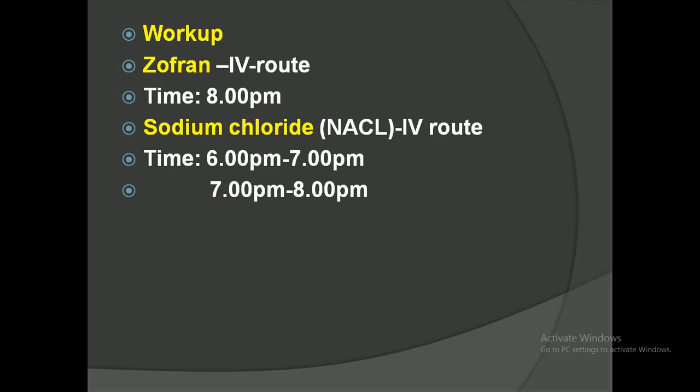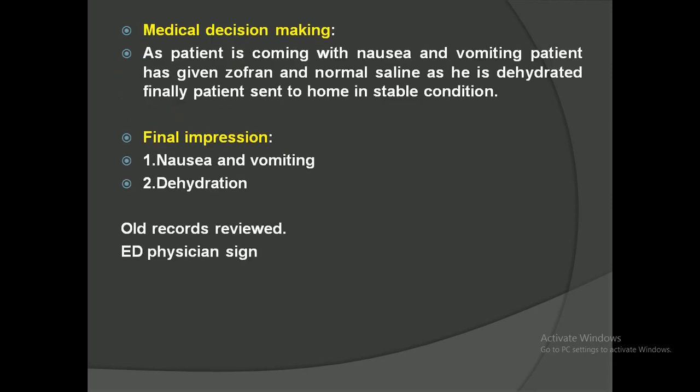As the patient is having nausea and vomiting, the physician has given an anti-emetic — that is Zofran — via IV route. As the patient will be losing some electrolytes, they might be dehydrated, so in order to get hydrated, normal saline (NaCl) will also be given. I will explain how to calculate the timing in the next session.